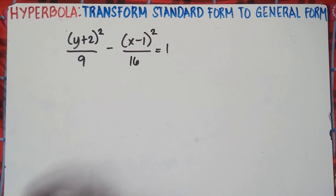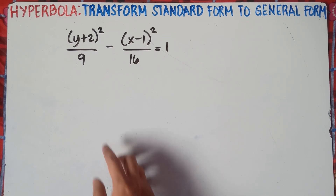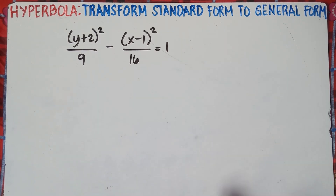So let's start with number 5. To solve this one, the thing you need to do is eliminate the denominators — you need to remove them. Why? Because it will be really complicated if you're dealing with rational equations, dealing with fractions.